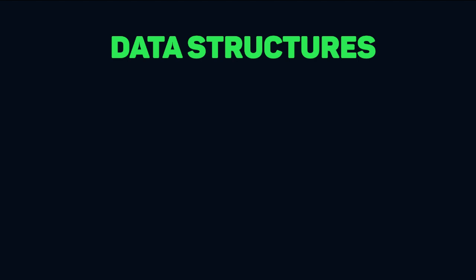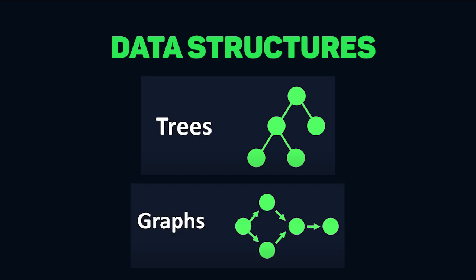The final two major data structures are trees and graphs. A graph provides a representation of relationships between different elements, like a social network where multiple users are connected. A tree is just a common type of graph in which there are root nodes that have branches off of them, kind of like the file system on your computer.